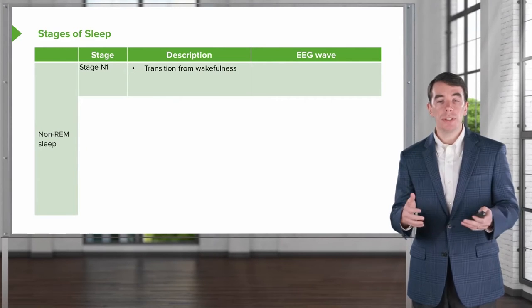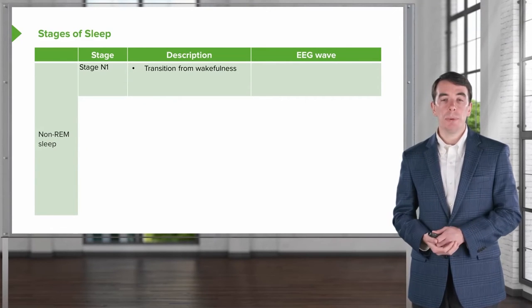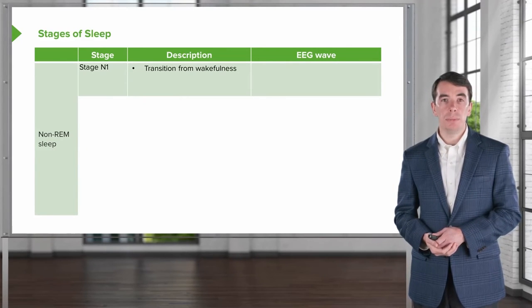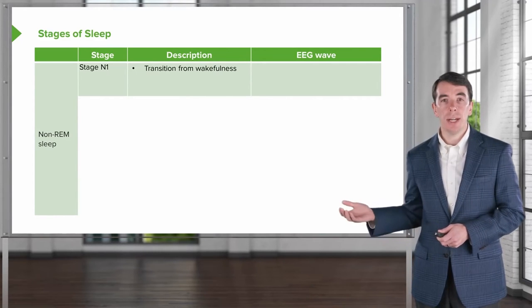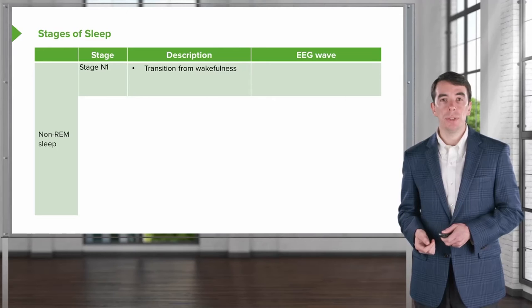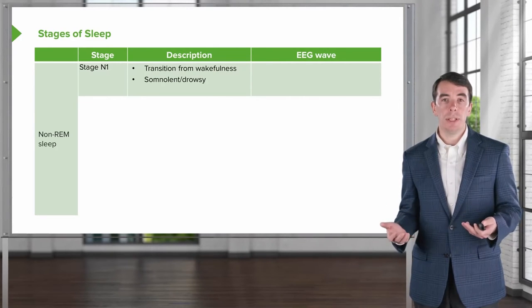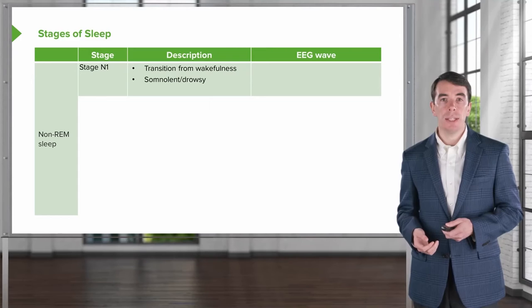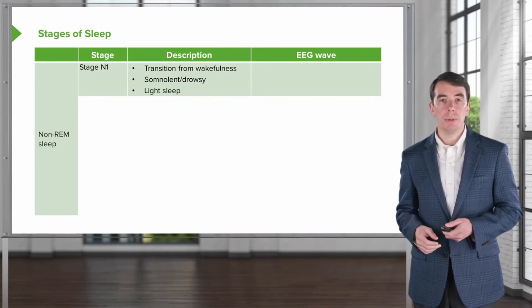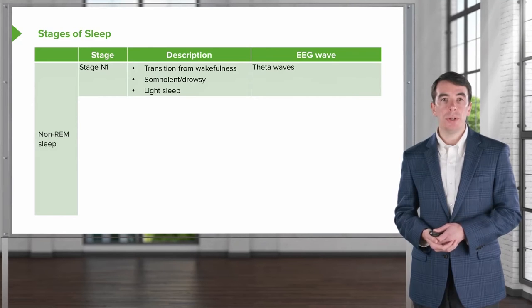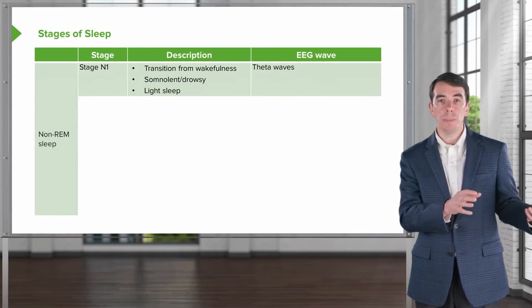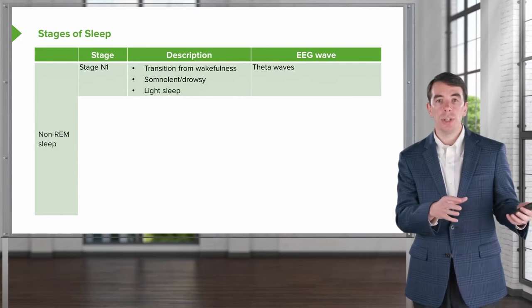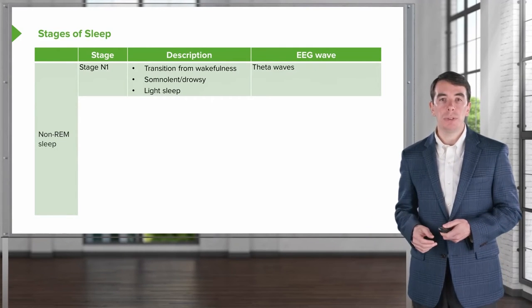As we move into sleep, the first part of sleep early in the night is non-REM sleep. And the first stage is stage one. This is characterized by a transition from wakefulness to sleep. Patients become somnolent or drowsy during that early phase. And this is the lightest sleep. Typically, the EEG pattern during that stage one of sleep are theta waves. As the brain moves from the alpha calm of wakefulness to the deep sleep of delta wave sleep.